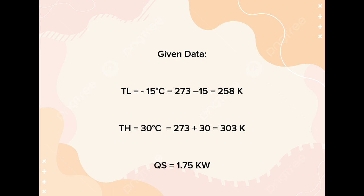The given data: TL is equal to negative 15 degrees Celsius is equal to 273 minus 15 is equal to 258 K. And TH is equal to 30 degrees Celsius is equal to 273 plus 30 is equal to 303 K.